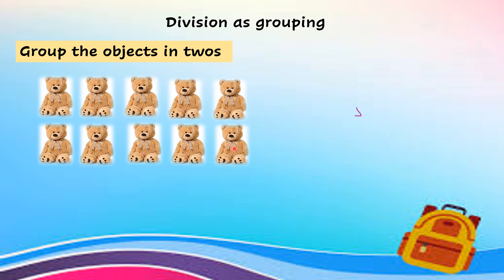There are 10 teddy bears. Now, I want to group the teddy bears in twos. In twos means that I need to group two in a group. Saya kena buat kumpulan. Dua teddy bear dalam satu kumpulan. So I circle like this. One group, two group, three groups, four groups and five groups.